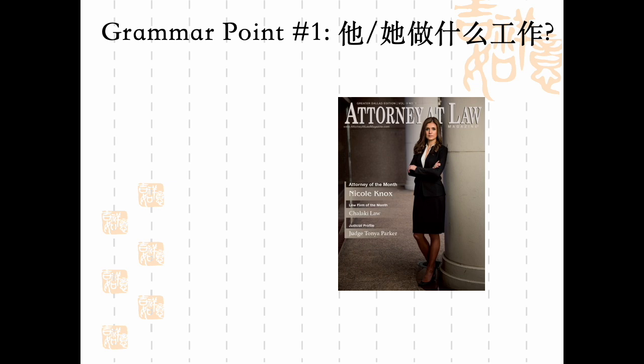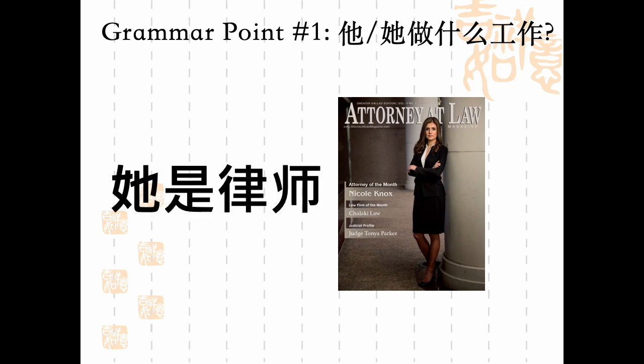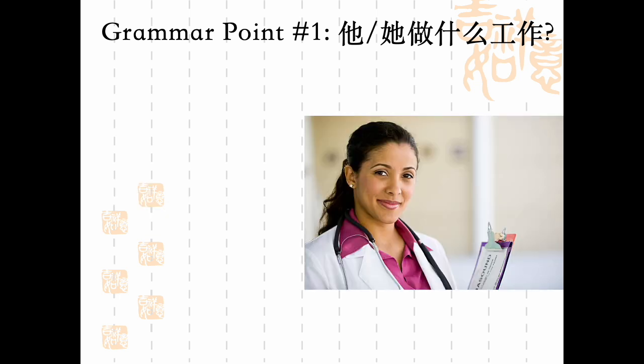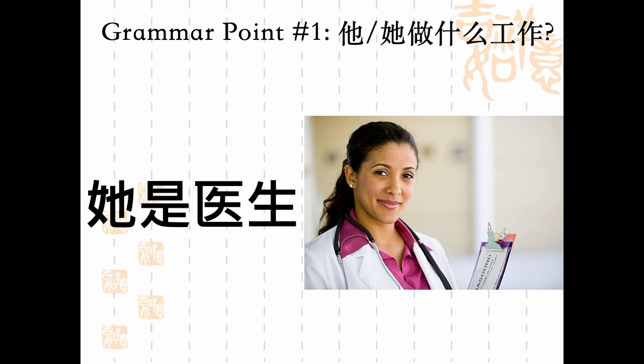她呢？她做什么工作？You could say 她是律师 — she is a lawyer. 她呢？她做什么工作？You could say 她是医生 — she is a doctor.